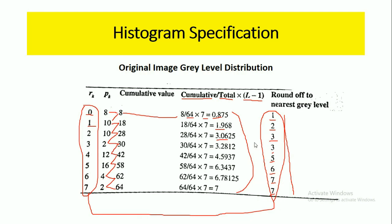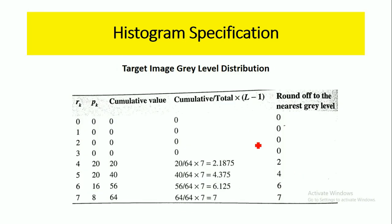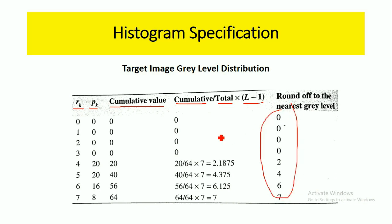The same procedure is applied to the target image. We take the gray level values from 0 to 7, take the number of pixels for the corresponding gray levels, compute the cumulative values, and finally divide by total pixels multiplied by L minus 1, obtaining rounded-off mapping values for the corresponding gray levels.